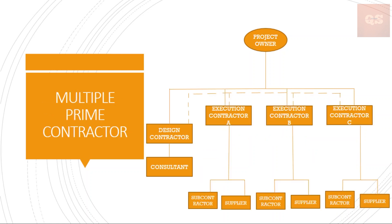The next arrangement is called the Multiple Prime Contractor, also called the Independent Prime Contractor Arrangement. Under this contracting model, the owner still retains the design professional as a single point of responsibility for all the planning and design of the project. However, the owner will then issue a series of construction contracts to different prime contractors. This multiple prime contracting arrangement may be organized by craft or trade — civil works given to one contractor, structural works to a second, mechanical to another, and electrical to another.